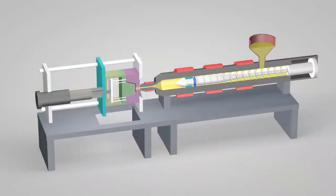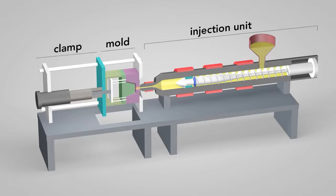An injection molding machine has three main parts: the injection unit, the mold, and the clamp.